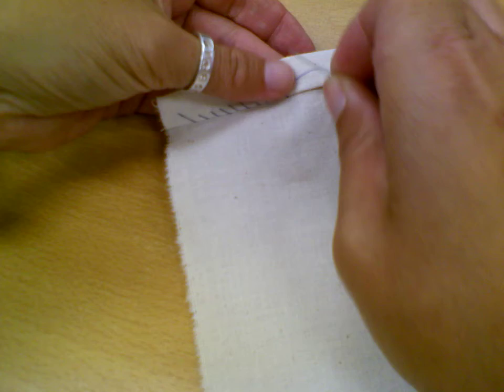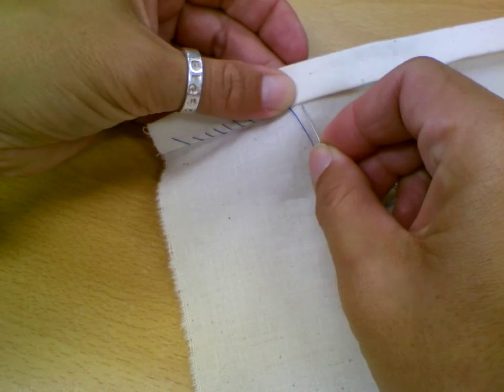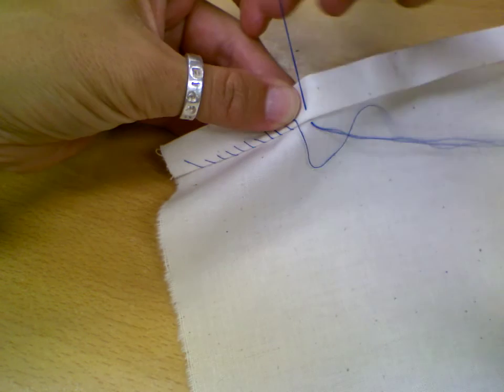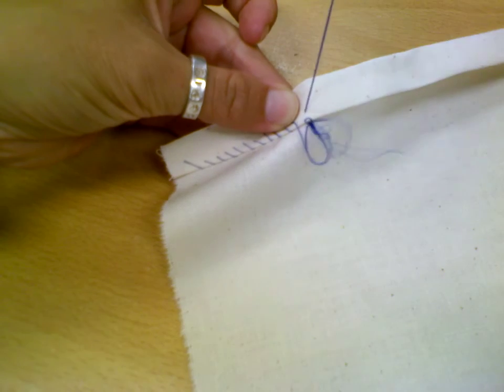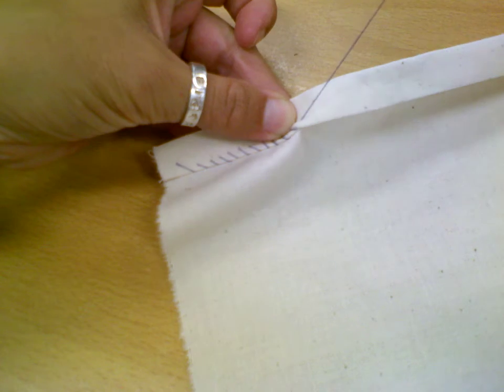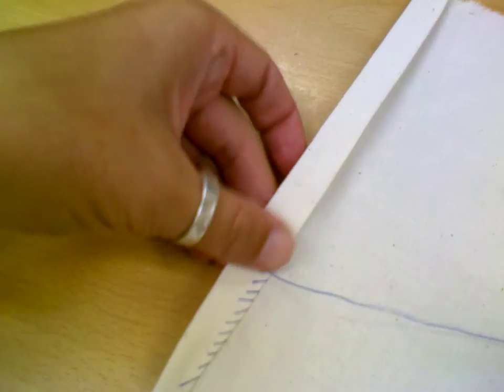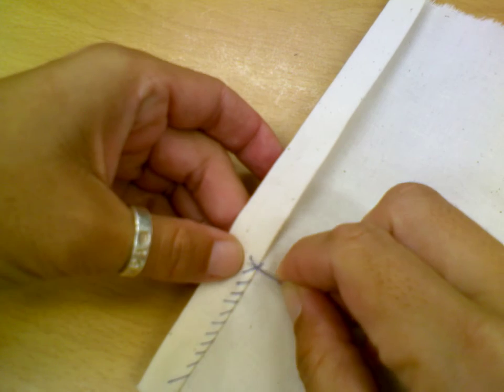Now, tying off the whip stitch, you'll want to do one more stitch and then stay on the wrong side of the fabric, in the fold if you will. Give yourself one more stitch.